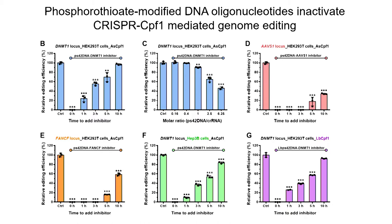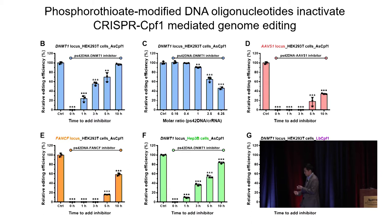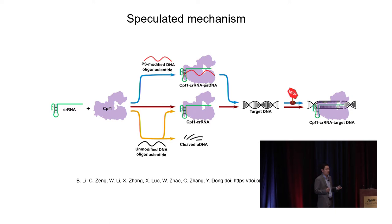We selected two additional gene loci — results were consistent. At different cell lines, it showed potent inhibition activity. For another CPF1 family protein, LbCPF1, it also showed time-dependent inhibition. We also conducted extensive mechanism studies to understand why PS-modified DNA inhibits CPF1 activity.